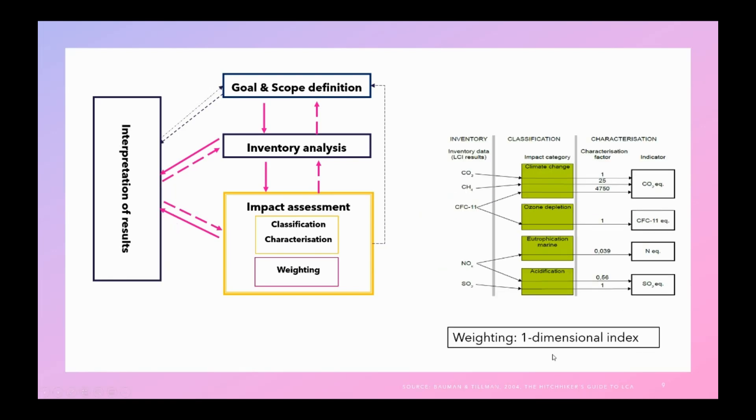But in some cases, interpretation of the impact in reference with the impact categories might not be easy to understand for the audience. And in that case, you might have to go one step further, that is weighting, to create a single dimensional index for all the impacts of your system. Weighting has been developed for several reasons.